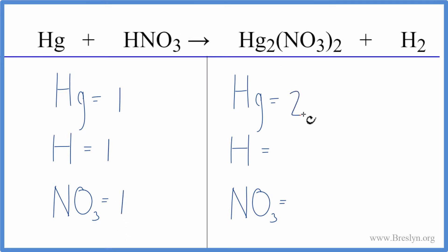Two mercury atoms, two hydrogens. Then we have our one nitrate times two. So we have two of these.